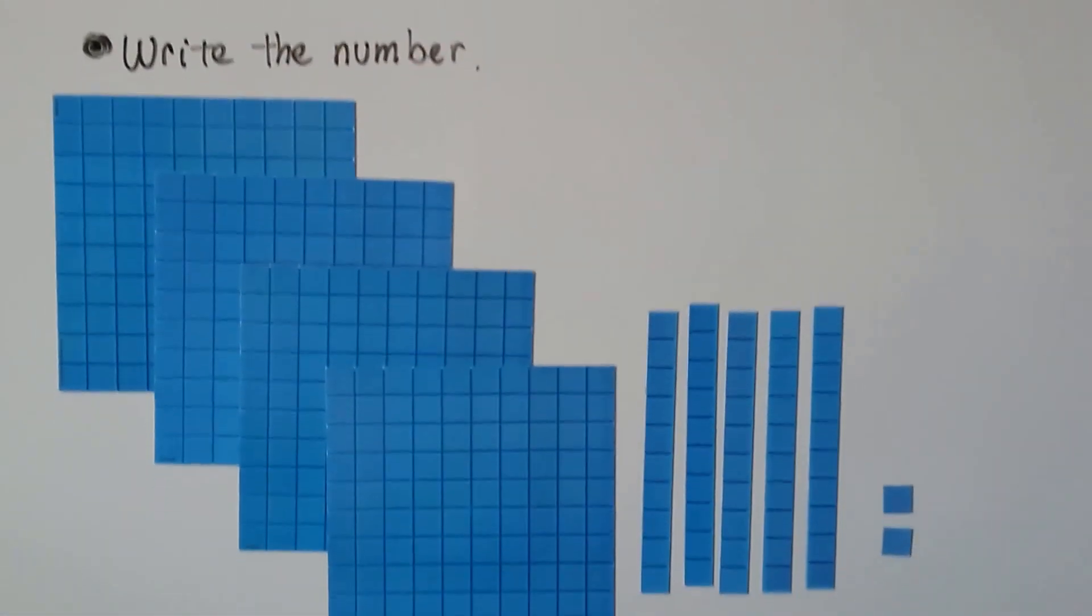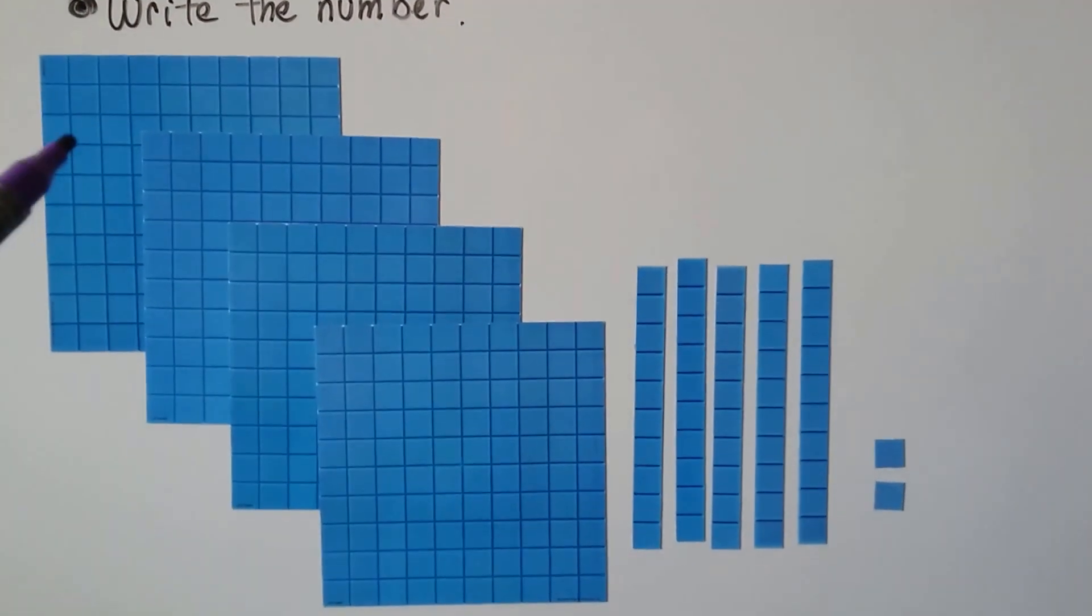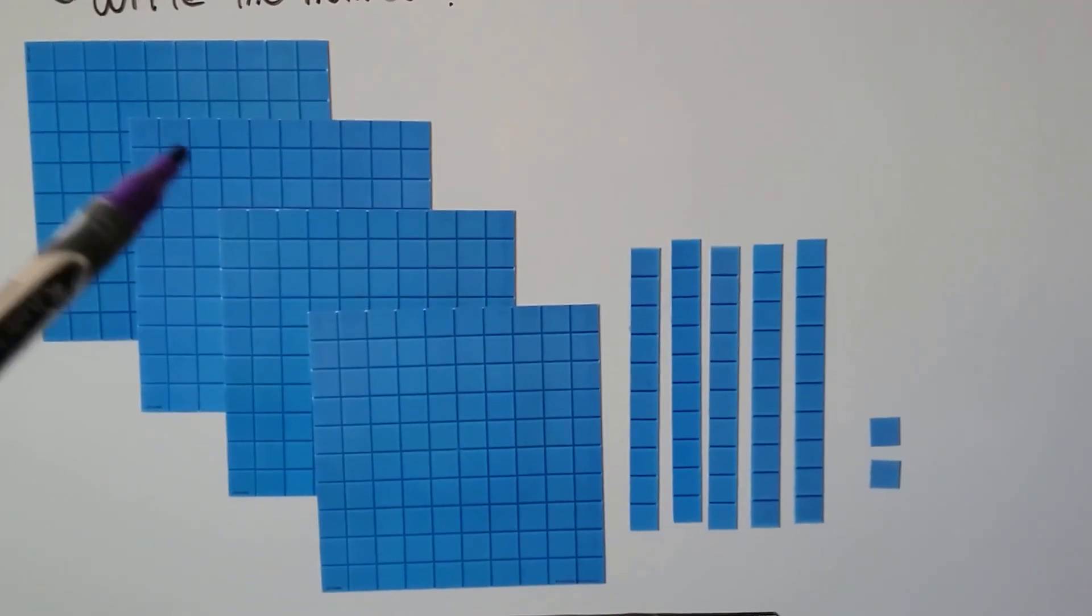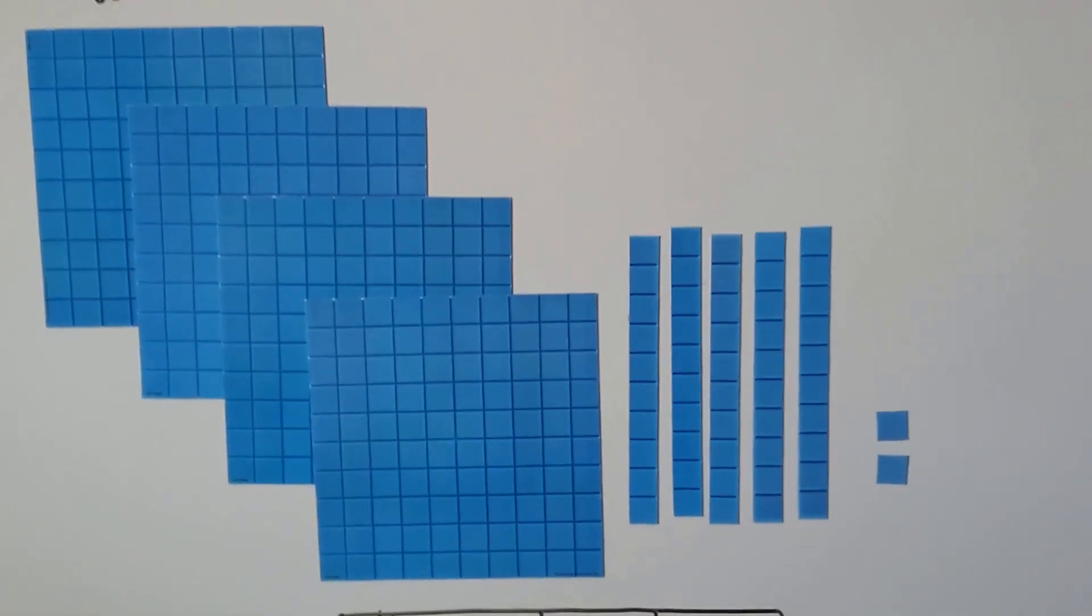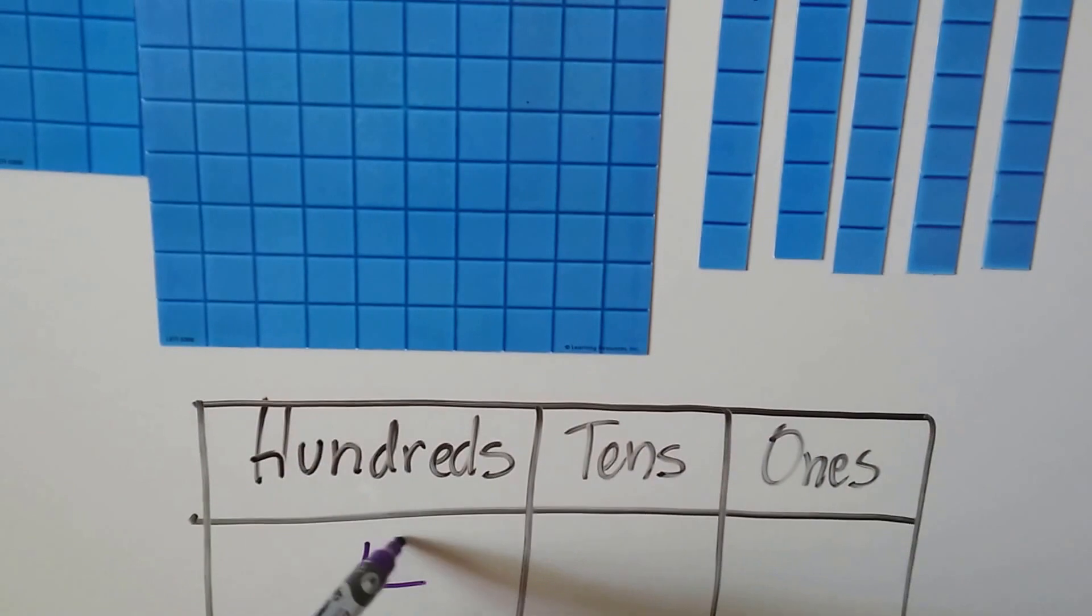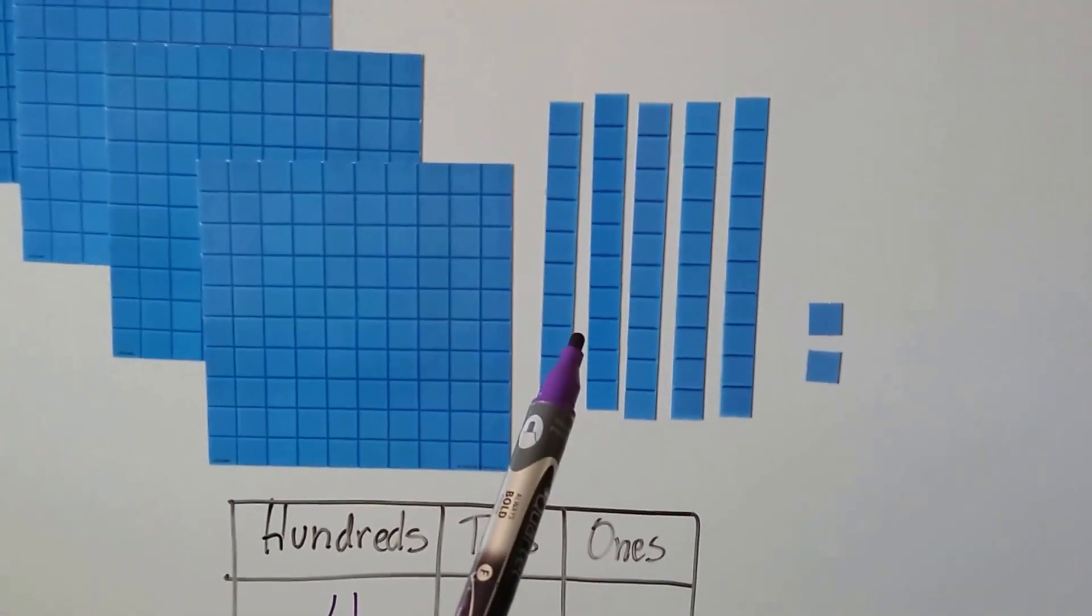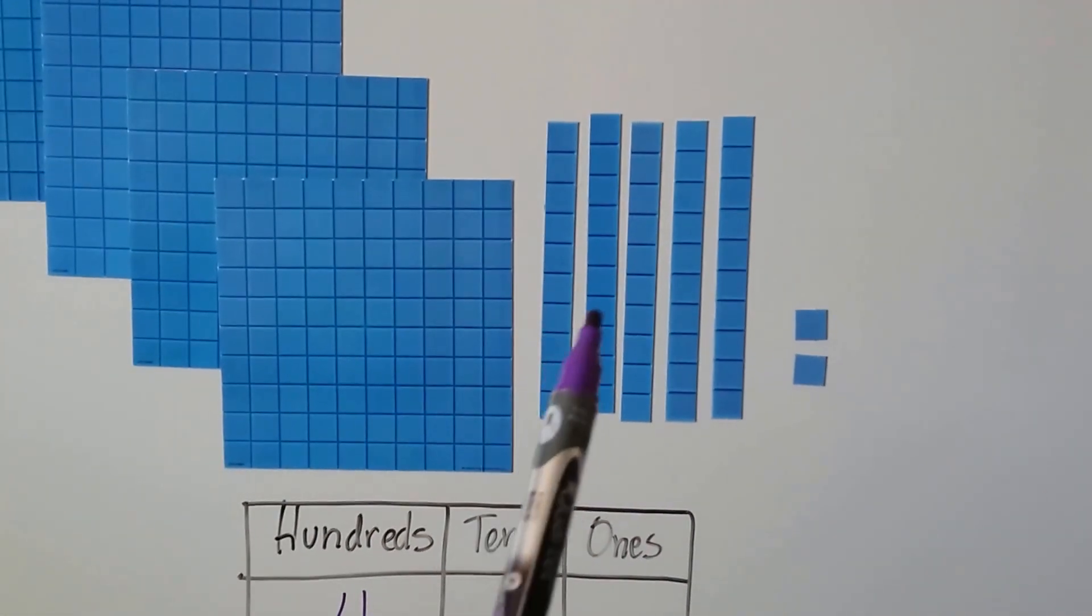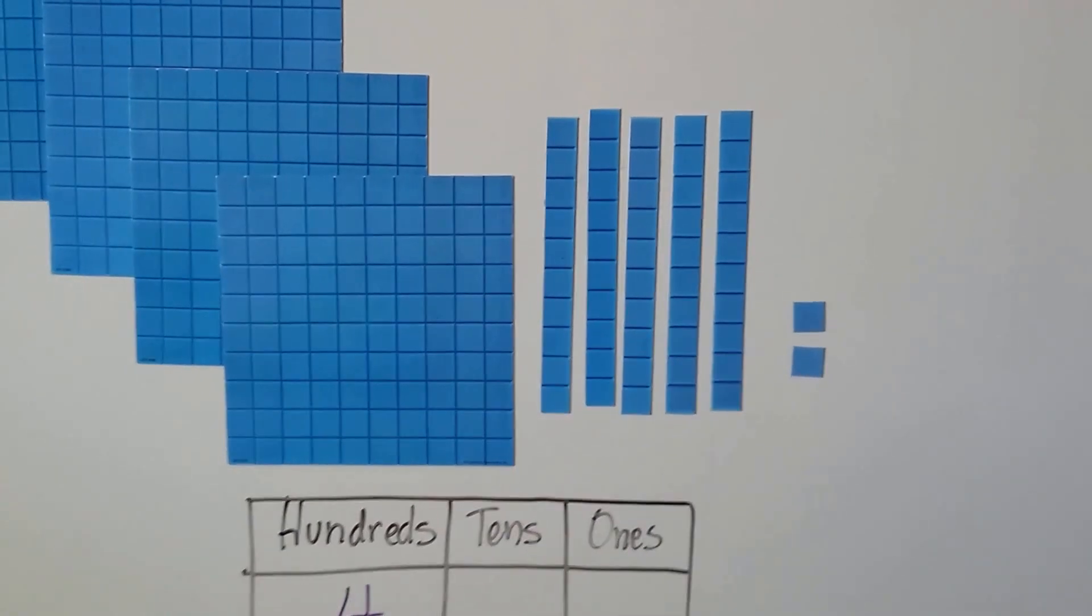All right. Let's see if we can look at this model and write the number. How many hundreds are here? 1, 2, 3, 4. So we've got 4 for the hundreds place. How many tens do we have? 1, 2, 3, 4, 5 tens.